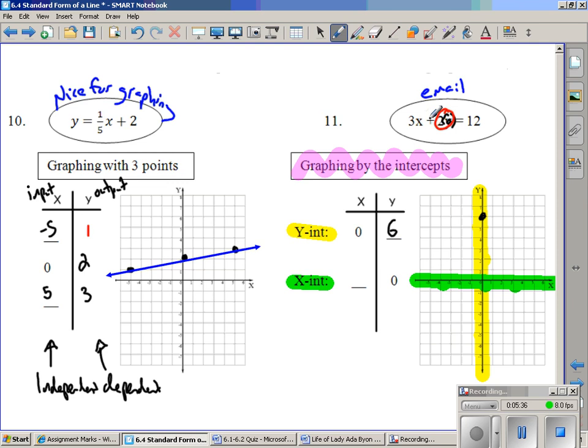So if I put a 0 in for y, that makes this whole term 2 times 0, 0. And 3 times x plus 0 is really just 3x equals 12. 3 times what is 12? 4. So when y is 0, x gets to be 4. That was really quick and really easy. And now I'll graph 4, 0.